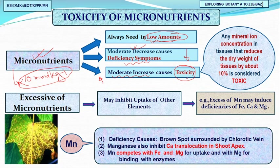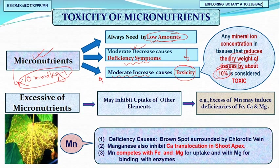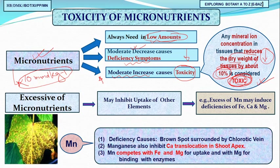How do you recognize toxicity? If the dry weight of plant tissues decreases by about 10 percent, you can conclude that a moderate increase in the concentration of a micronutrient is causing toxicity to the plant. This is called toxicity of micronutrients.